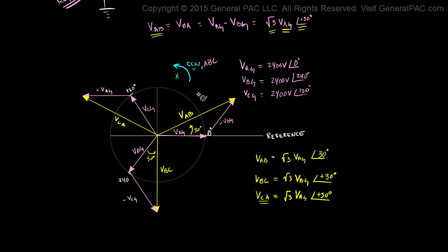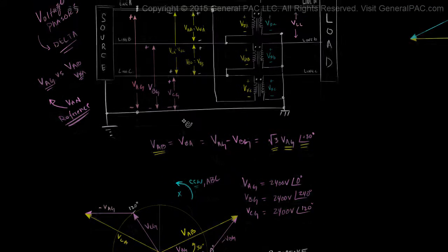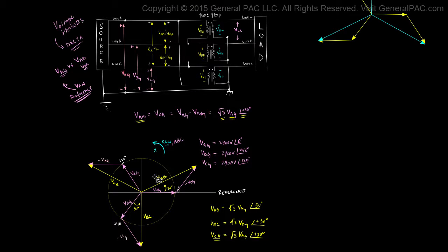Okay, so let's zoom out here and verify this. So remember, VAB is the voltage across this line, these two lines, right? Line A and line B. VBC is the voltage across line B and line C. And then VCA is the voltage across line C and line A.